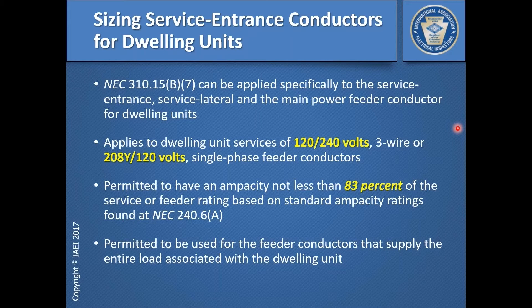It applies to dwelling unit services: 120/240-volt or 208/120-volt single-phase services or feeders. For the 2017 code, what you're basically looking at is doing an 83% load calculation on the ampacities that you would get from the most-used table in the National Electrical Code, 310.15(B)(16).